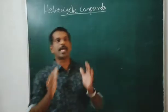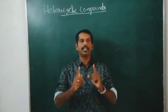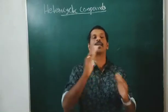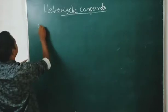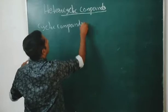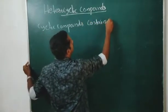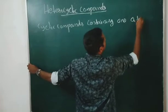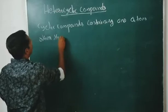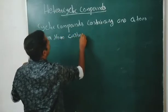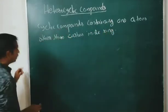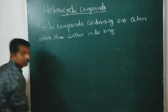Heterocyclic compounds are cyclic compounds containing at least one atom other than carbon atom in the ring. This type of compound is known as a heterocyclic compound.